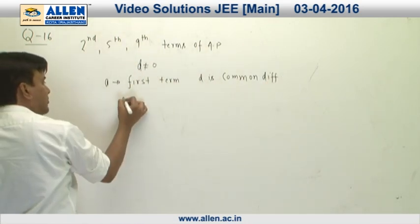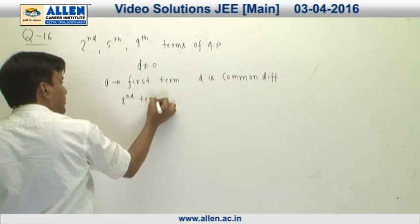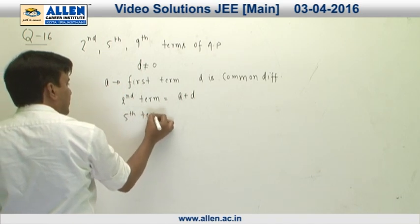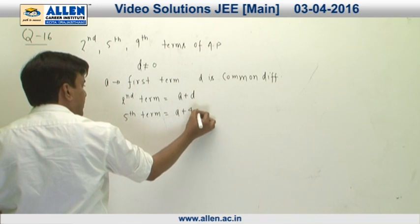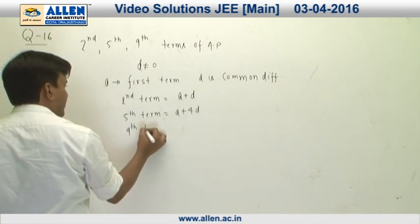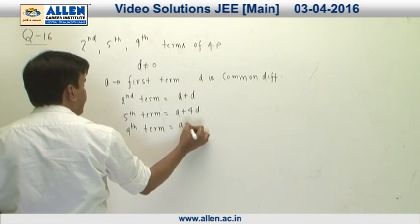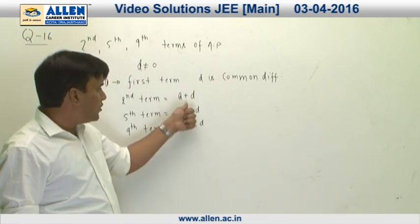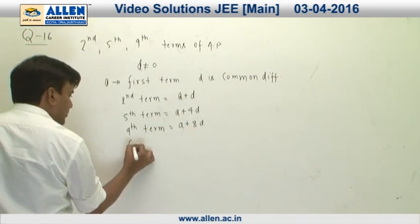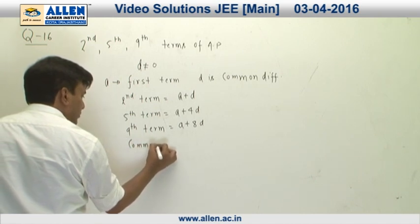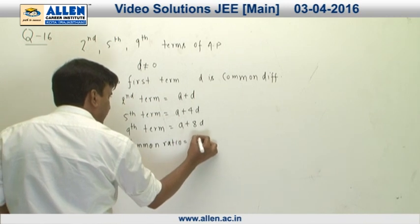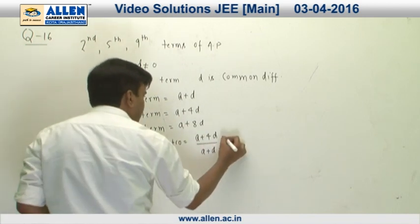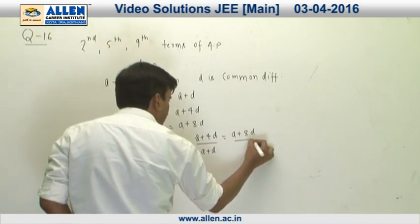So we can clearly see the second term is going to be A plus D, fifth term A plus 4D, and ninth term A plus 8D. Since these three terms are given to be in GP, the common ratio equals A plus 4D upon A plus D, and that is equal to A plus 8D upon A plus 4D.